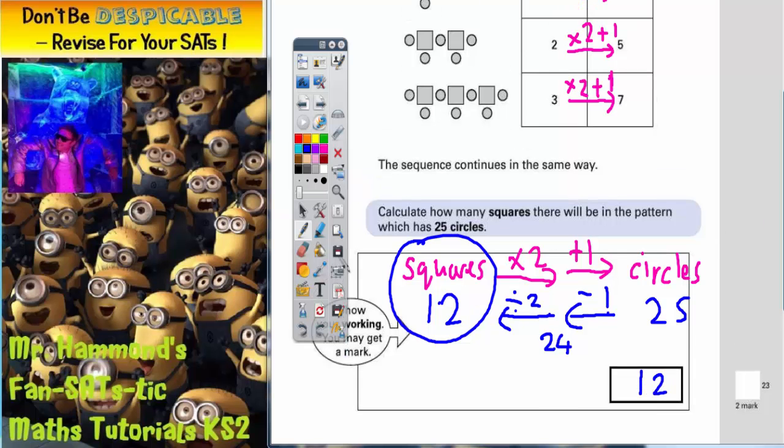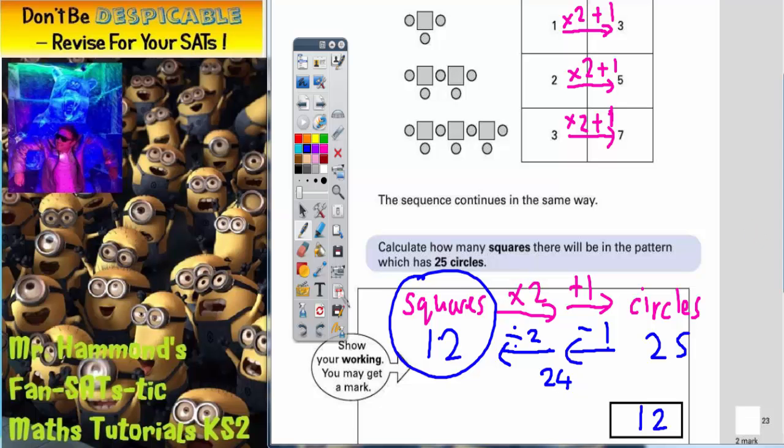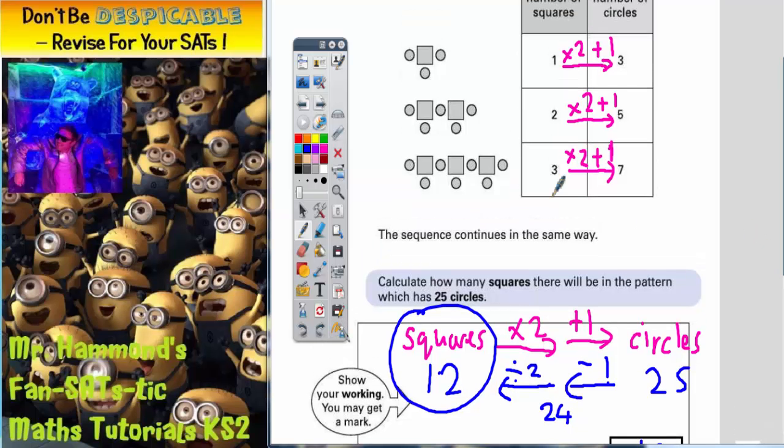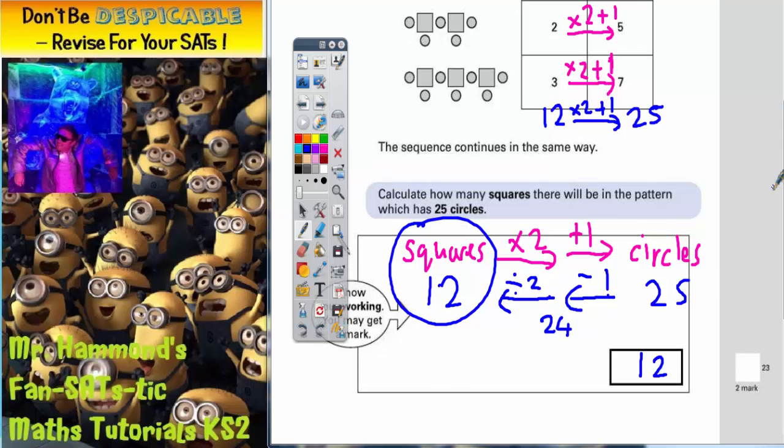Just to double check in terms of the table, if we said that there were 12 squares, we already know that this rule works. So times 2 plus 1. 12 times 2 is 24, plus 1 is 25, so there would be 25 circles, which is exactly what it says in the question. So your final answer is that with 25 circles, there would be 12 squares.